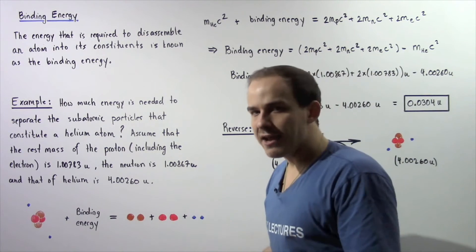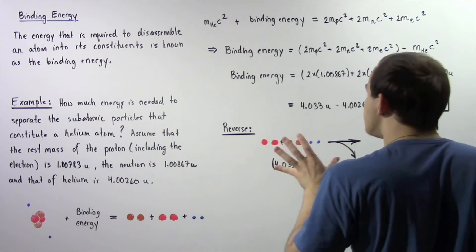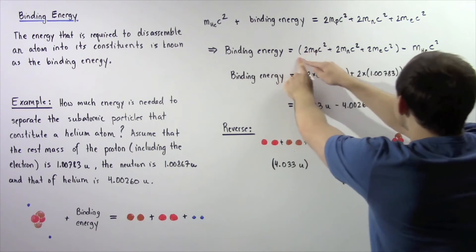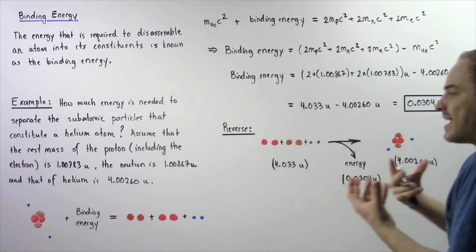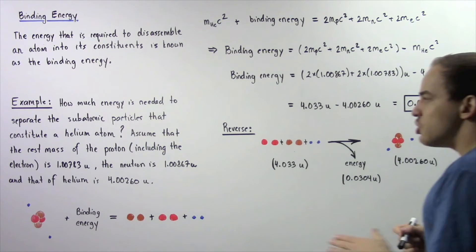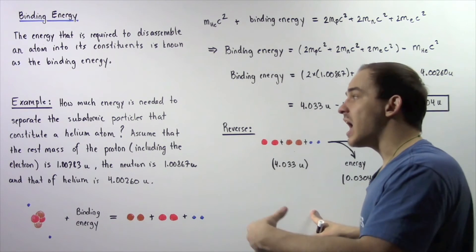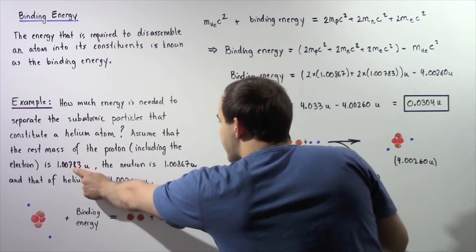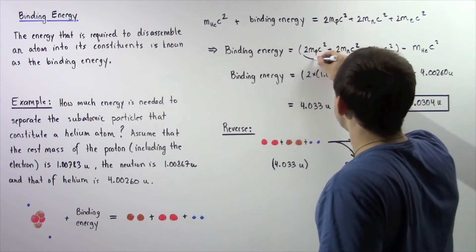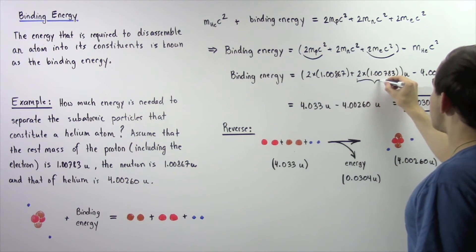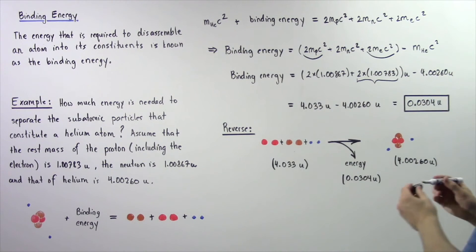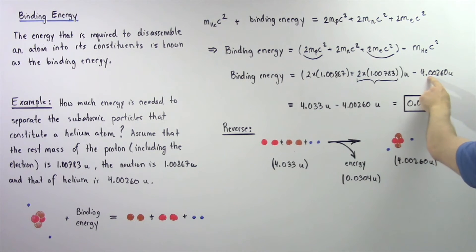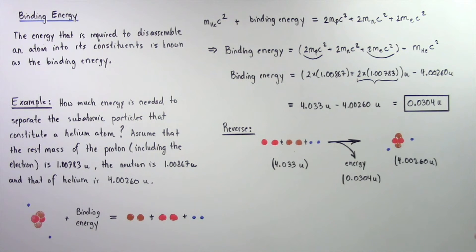What we're trying to find is the binding energy. The binding energy equals the sum of the individual rest masses of each subatomic particle minus the rest mass of the entire complete helium atom. Notice that we're given that the rest mass of the proton and the electron is 1.00783. Taking the sum of all particles gives us 4.033 unified atomic mass units. Subtracting 4.00260 unified atomic mass units gives us 0.0304 unified atomic mass units.